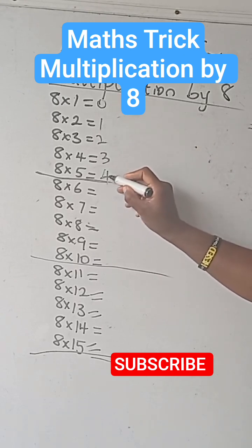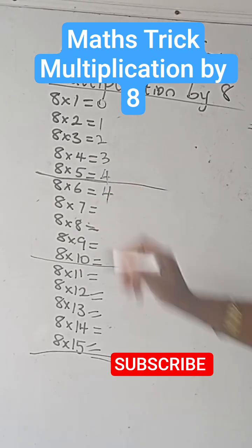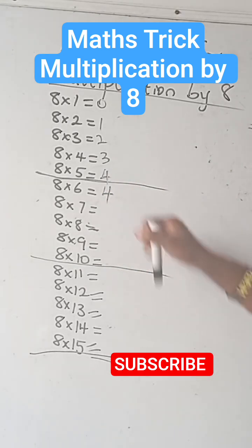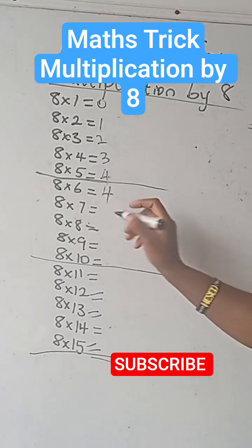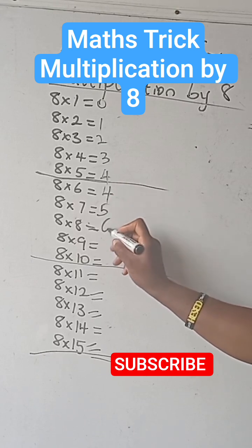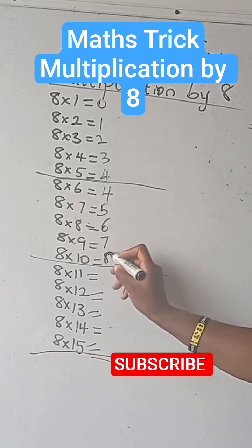Now, on getting to 4, what you simply do is repeat the same 4 here. We're going to have another 4 here, then you go on 5, 6, 7, 8.